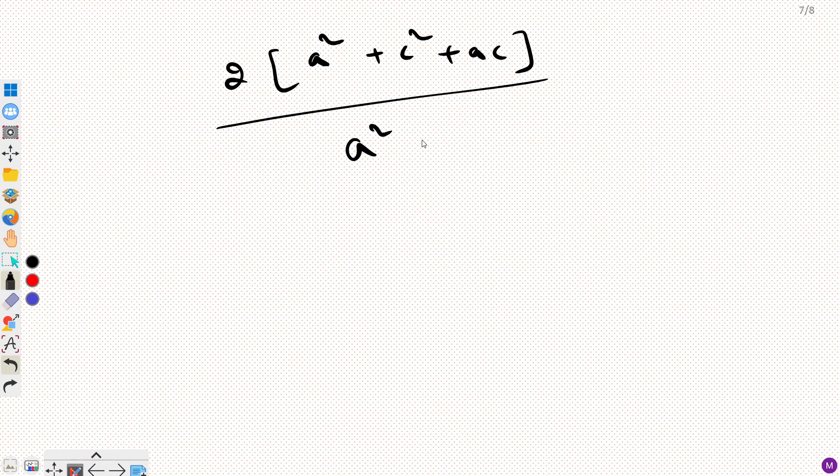A squared plus c squared plus ac. So we can cancel out this, so from here we got our value as 2.